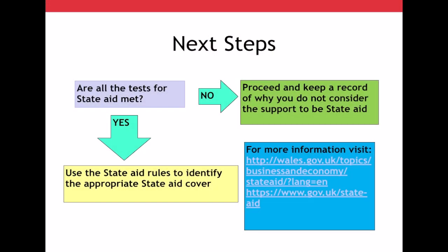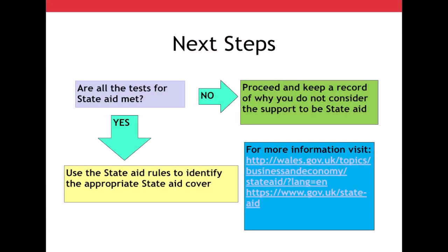So what are your next steps? Now that you've read this, look at your project. Are all the tests for state aid met? If the answer is no, then you can proceed, but keep a record of why you do not consider the support state aid, should the Commission decide to investigate. If the answer is yes, use the state aid rules to identify appropriate cover.